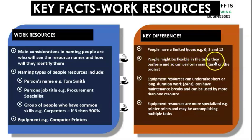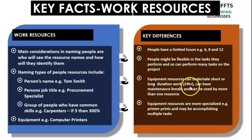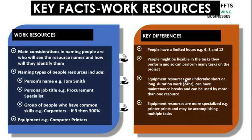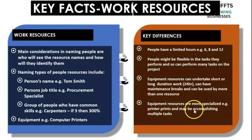People might be flexible in the tasks they do and can perform many tasks on the project. Equipment resources can undertake short or long duration work — you can work equipment for 24 hours. They have maintenance breaks and can be used by more than one resource. You have to be very careful when allocating equipment that you don't allocate the same piece of equipment to two different tasks or people at the same time, or you will over-allocate the resource. Equipment resources are more specialized — a computer printer prints.